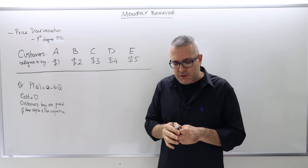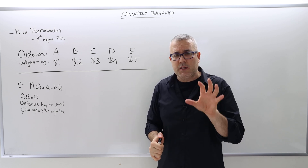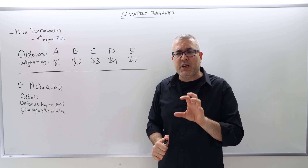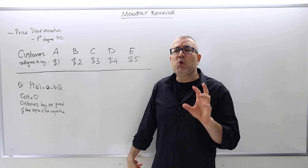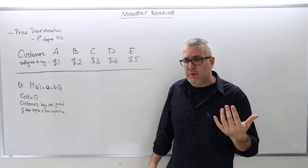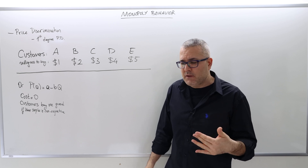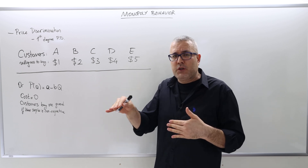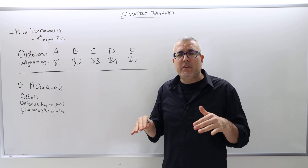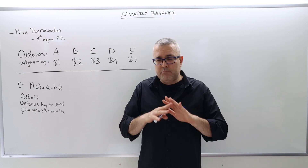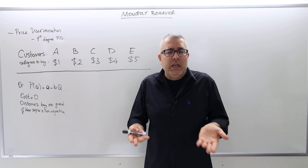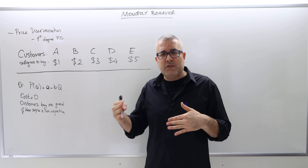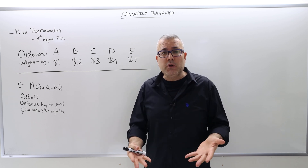First-degree price discrimination means the following: the monopolist knows the customers very well, and the monopolist knows how much each customer is willing to pay. The willingness to pay is a concept we define in Intermediate Microeconomics 1. It means how much you as a customer are willing to pay for this good. It is not about how much money you have.